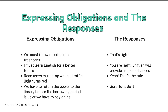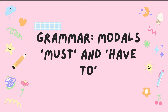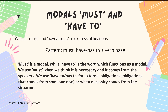So in the obligation expressions, three sentences use 'must' and the last sentence uses 'have to.' After 'must,' it is always followed by the base verb — for example: must throw, must learn, must stop. And the last one: have to return. Now let's continue to the grammar section — modals: must and have to. The basic sentence pattern is: must or have/has to plus base verb. Base verb is the first form or base form of the verb.